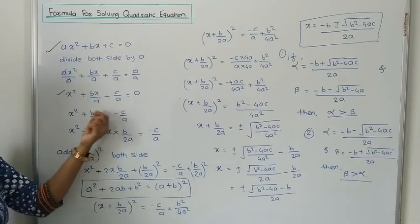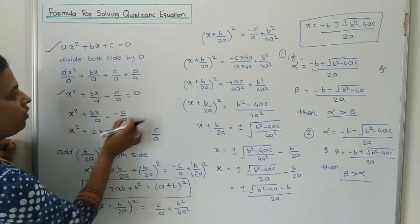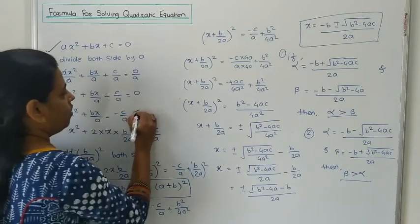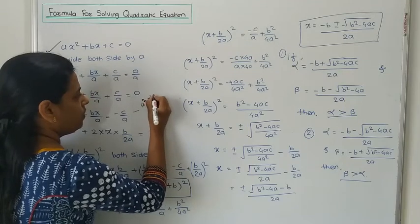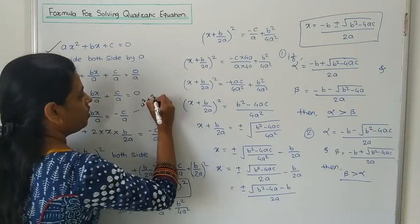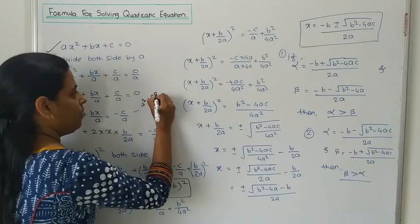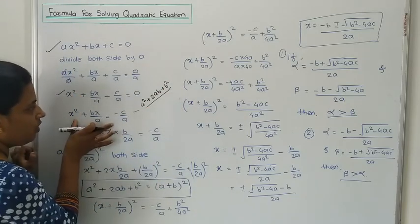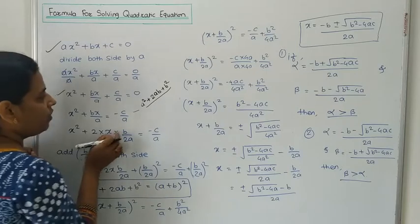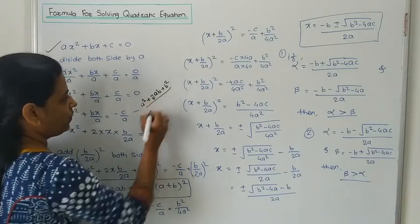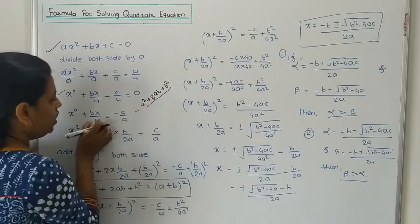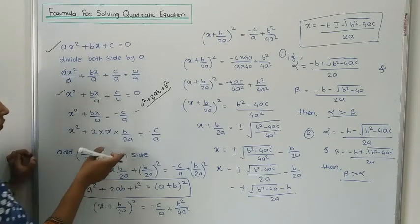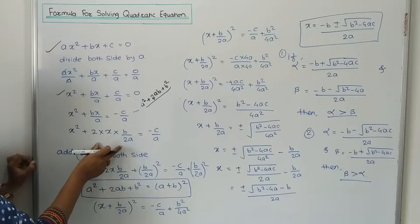After dividing, we get the equation and then do some arrangement — changing the side of the constant term. Then we convert the equation into the form A² + 2AB + B². Since there is no factor of 2 in the middle term, we multiply and divide by 2. Then the B value is B/2A.